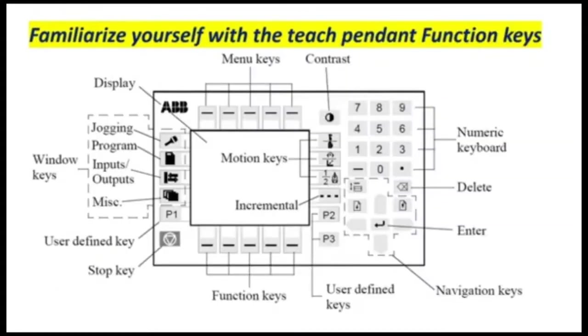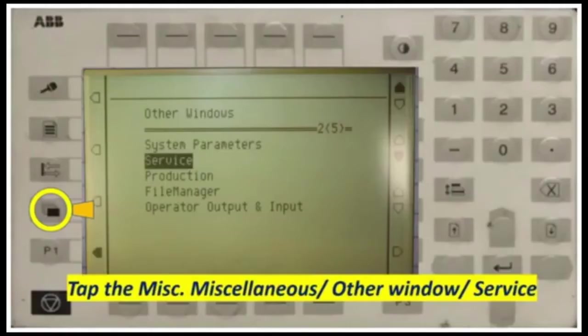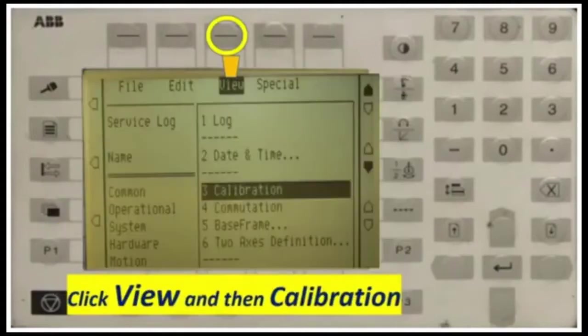I also have a video at the end of this presentation about the S4C flex pendant. Now let's go back to the topic. Tap the Miscellaneous window, then Service. After that, click View and select number 3, Calibration.